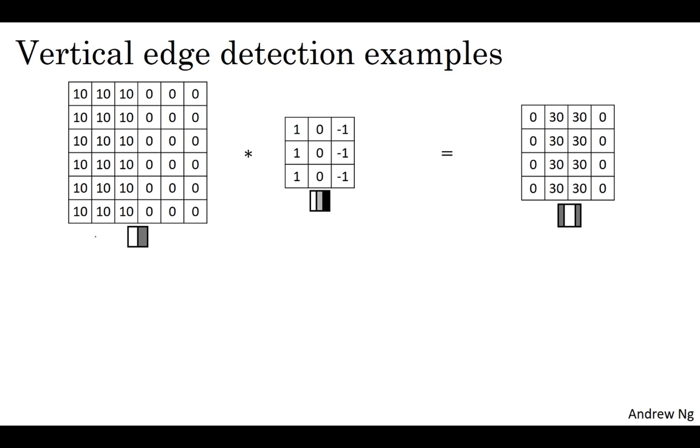Here's the example you saw from the previous video, where you have this six by six image that's light on the left and dark on the right. Convolving it with the vertical edge detection filter results in detecting the vertical edge down the middle of the image.